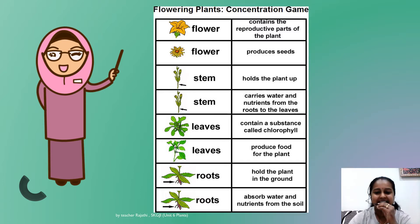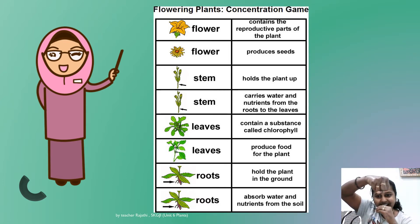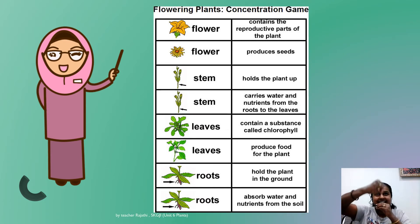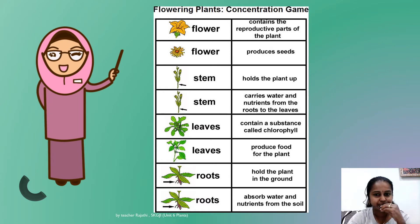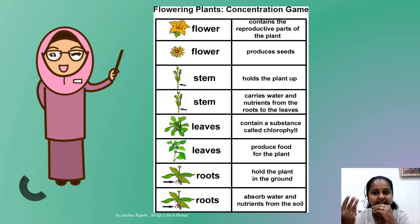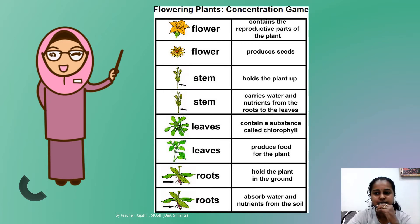The leaves produce food for the plant. The roots absorb water and nutrients from the soil and keep them inside. So these are the functions of the flower, stem, leaves, and roots. I hope you can understand the parts of the plant and the functions of each part.